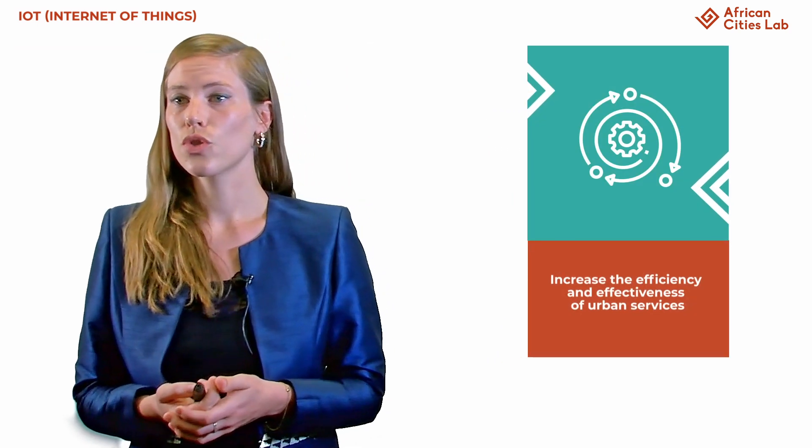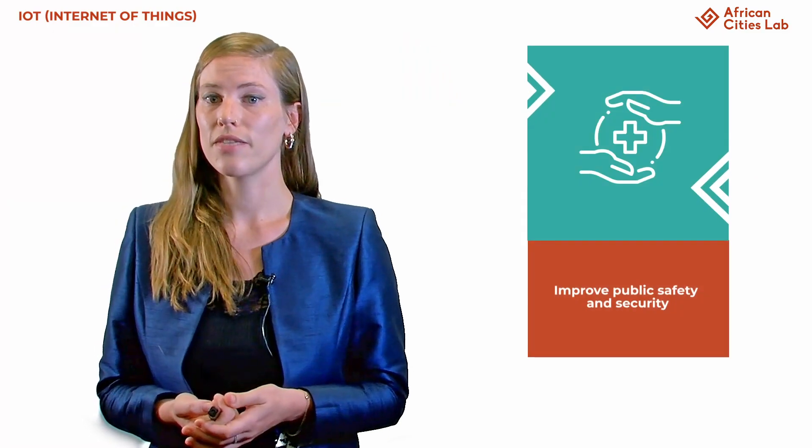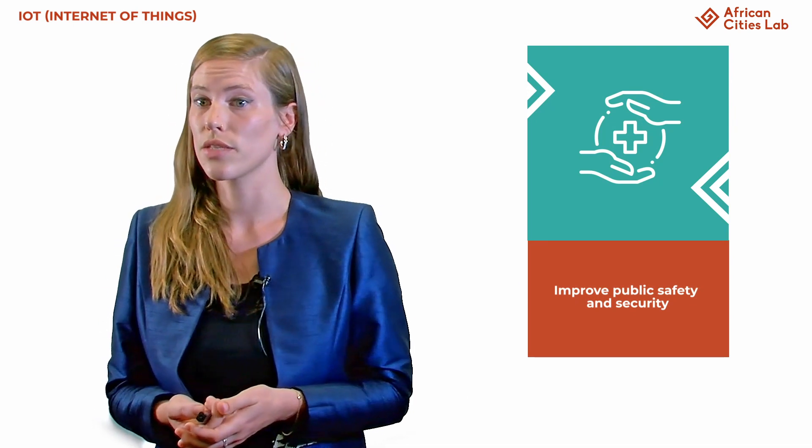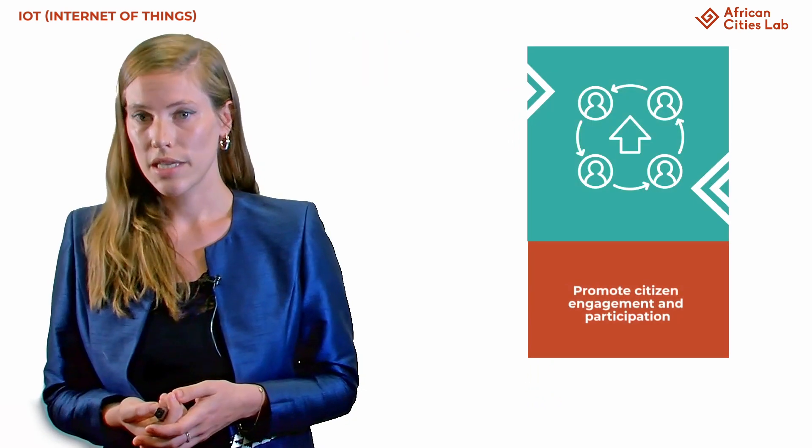Networks of physical objects embedded with sensors, software and other technologies enable them to collect and exchange data over the Internet — this is the Internet of Things. IoT can reduce waste and increase the efficiency and effectiveness of urban services, for instance by monitoring utilities such as water or electricity in real time. It can also help improve public safety and security by monitoring crime hotspots, monitor environmental conditions such as air quality, and promote citizen engagement and participation in urban governance by gathering data on citizen preferences to inform urban policies and services.